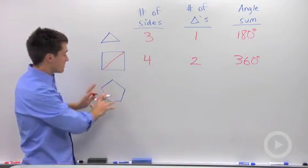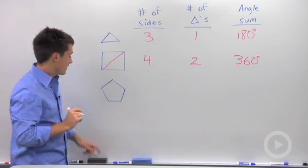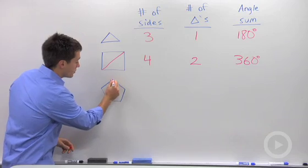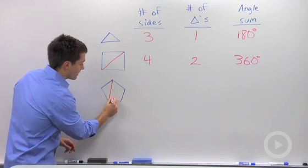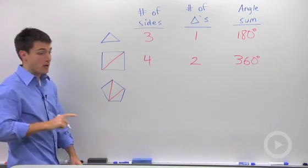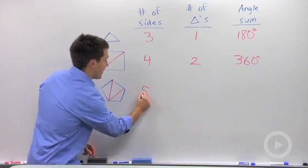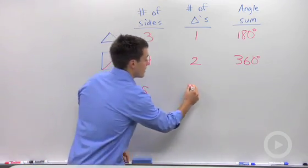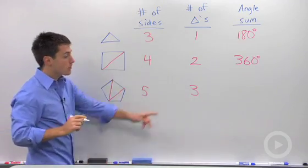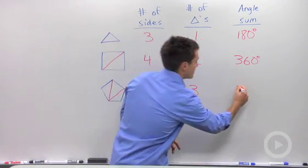So I'm starting to notice a pattern. Let's make sure it works for a pentagon. A pentagon, we can draw in two diagonals from one vertex, and now we've created one, two, three triangles. So we have five sides, we've created three triangles, and three times 180 is 540.